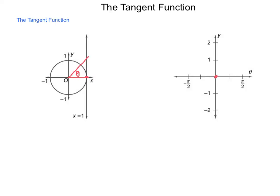If we move up to 45 degrees, it actually touches right at the value of 1. So at pi over 4, we're at a positive 1.